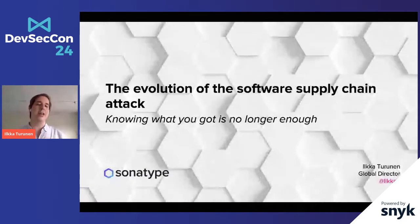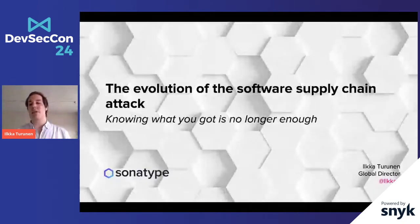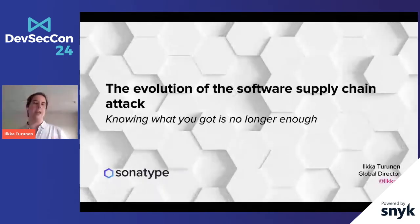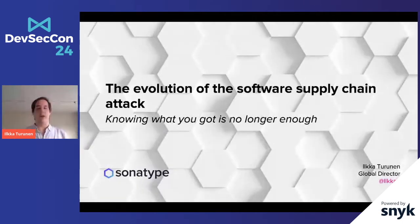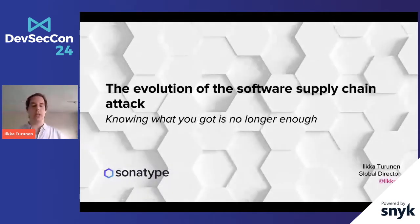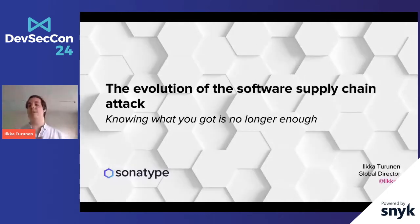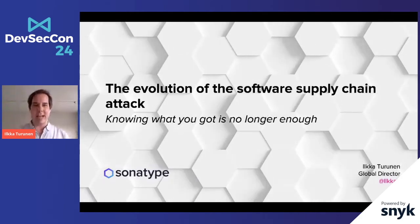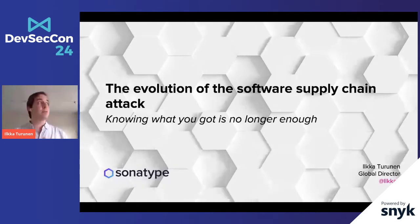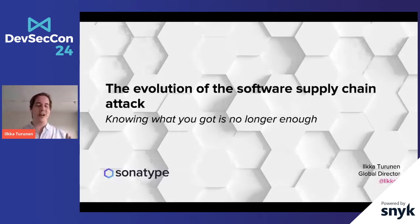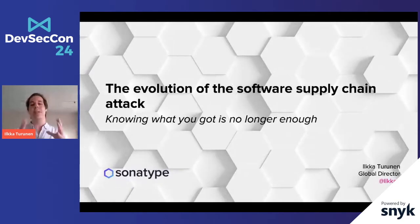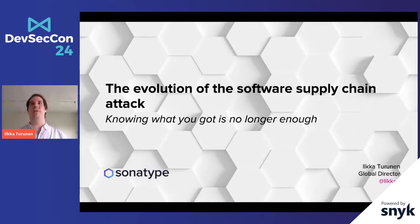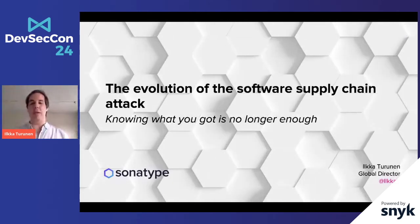Coming into Simon's talk just before myself, the software supply chain attack is all about influencing the code that you don't own, yet the stuff that you use in your software. It's a mode of attack that in the DevSecOps sphere we've been talking about for years. But just as our practices evolve, the mode of the attack itself evolves. In this 15 minutes I'll walk you through the evolution of the software supply chain attack and the strategies for defending against each one.